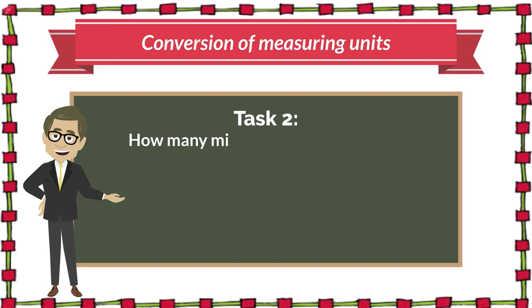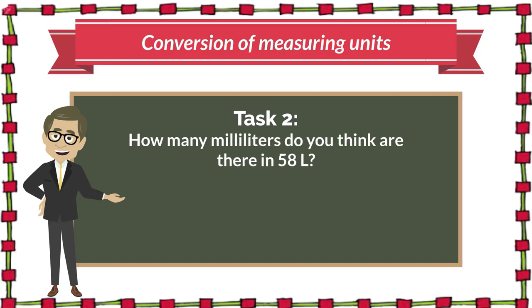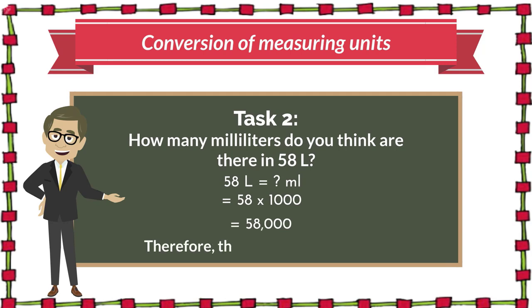Now, how many millilitres are there in 58 litres? Let's find out the same way. 58 litres equals how many millilitres? 58 multiplied by 1000 equals 58000. Therefore, there are 58000 millilitres in 58 litres.